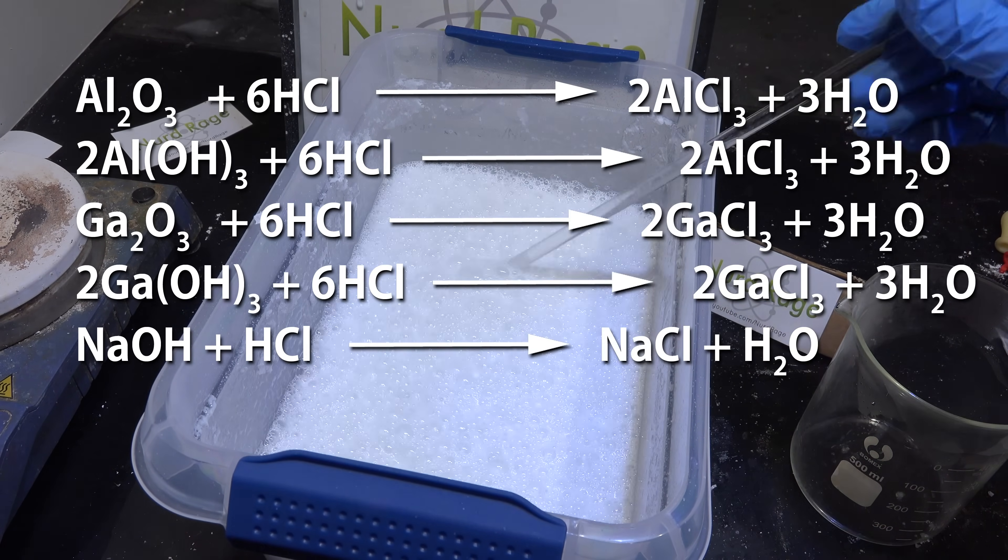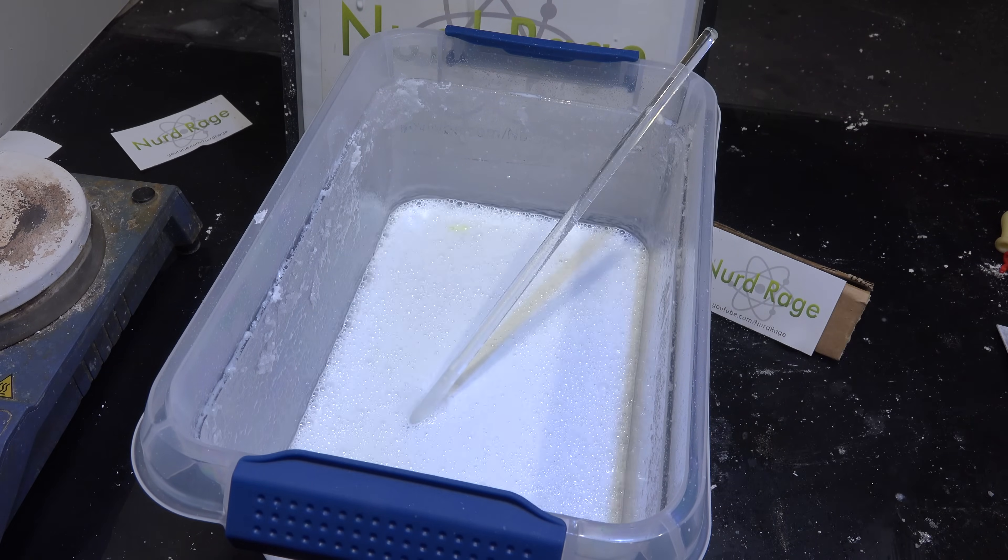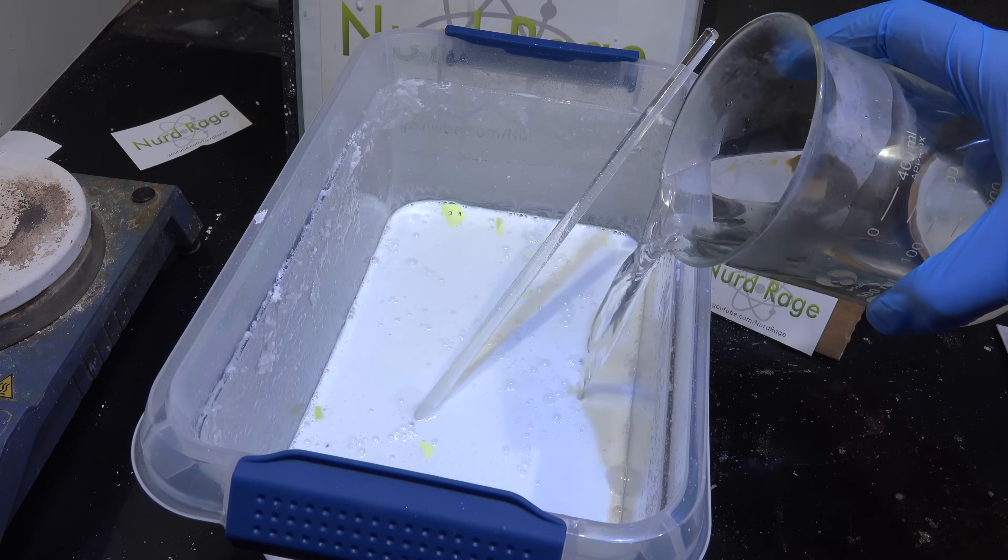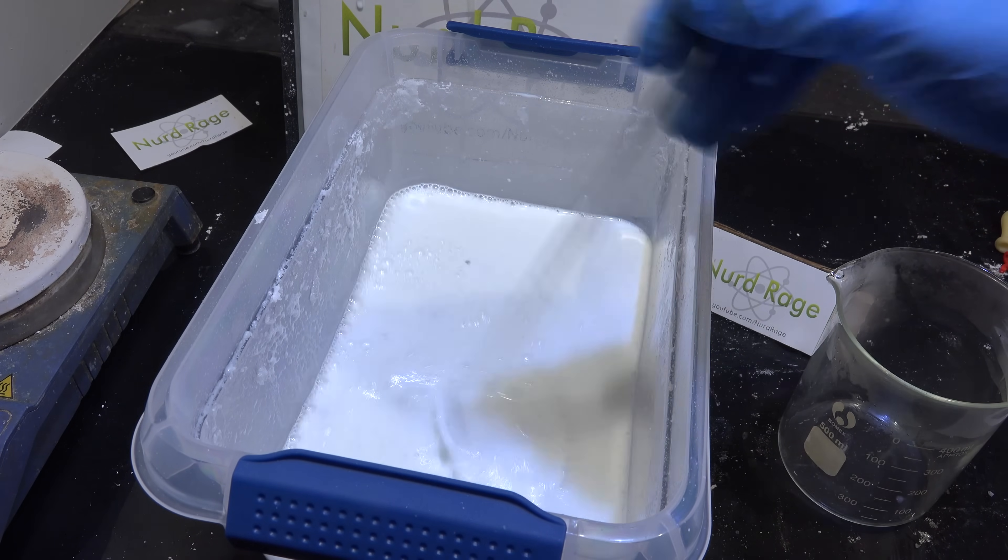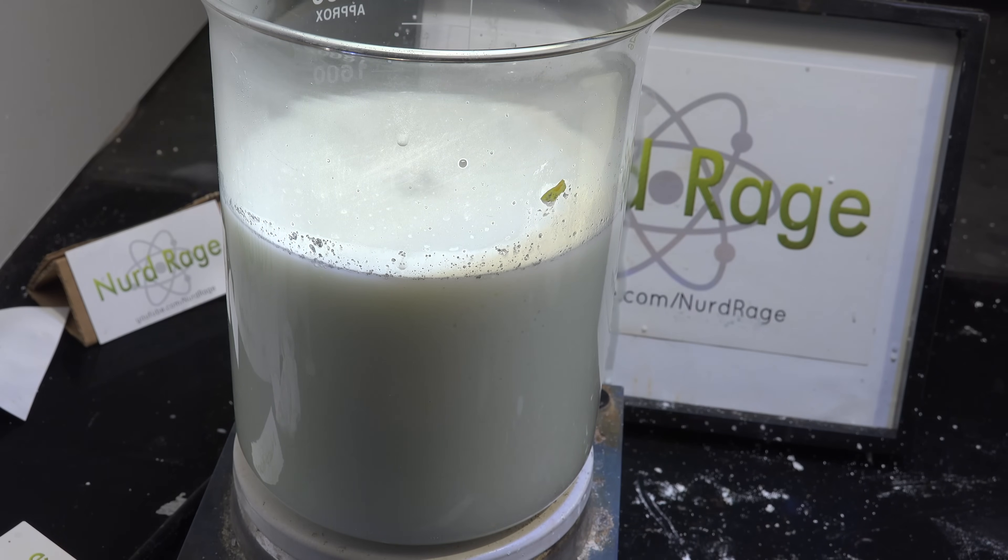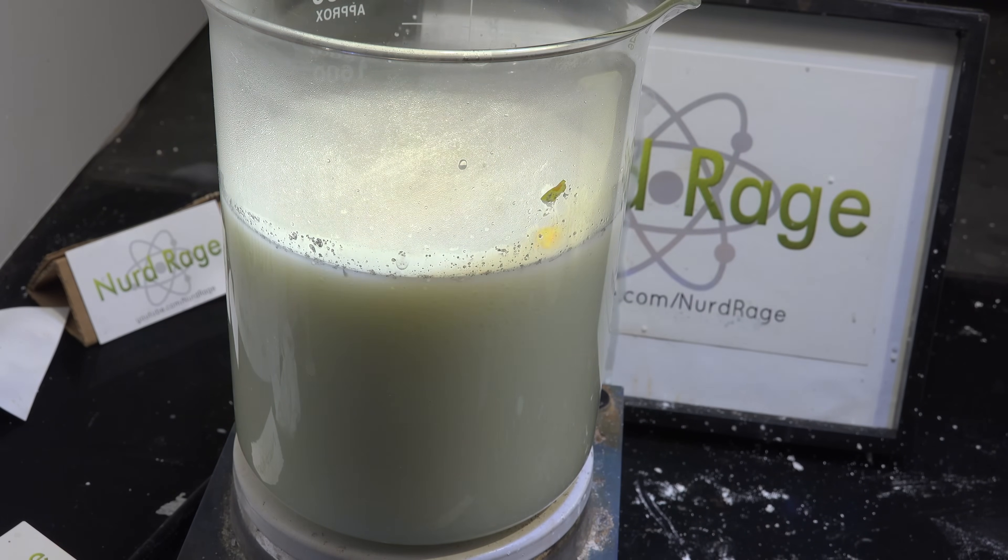What we want is to convert all the metal oxides and hydroxides into their chloride salts: aluminum, gallium and sodium chloride. Keep adding hydrochloric acid until it stops bubbling. It's not clear yet because at room temperature the conversion to aluminum and gallium chloride is rather slow. Transfer the mixture to a glass container and heat it on the hot plate. As it heats up it will drive the reaction forward and clear up.